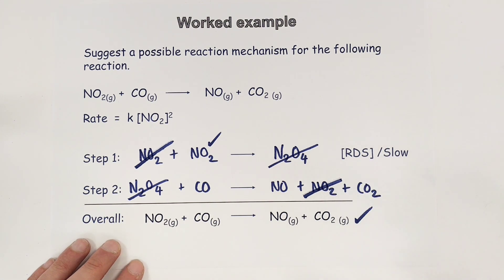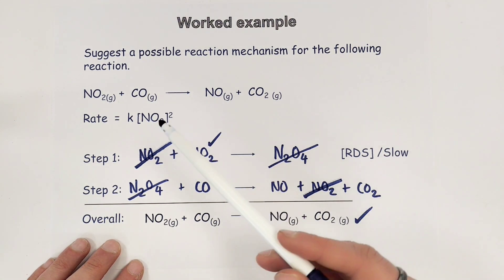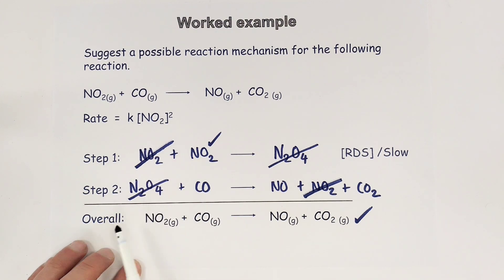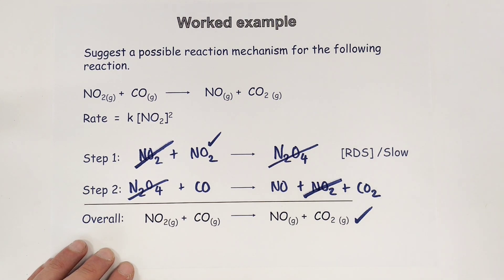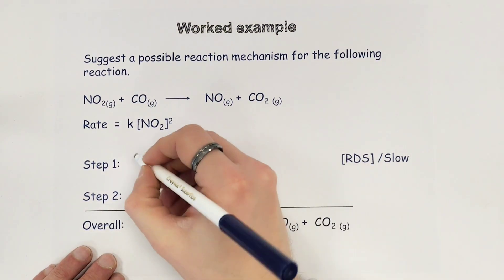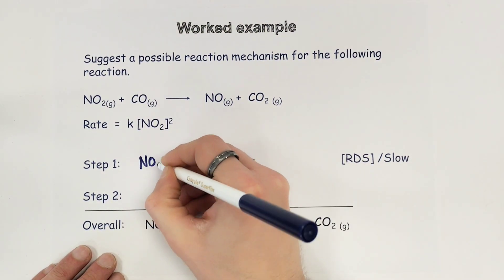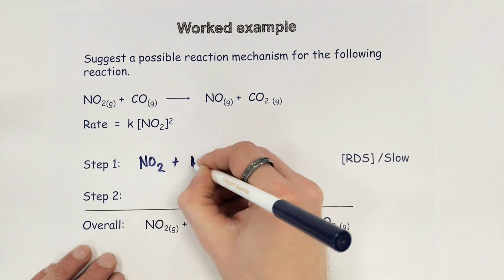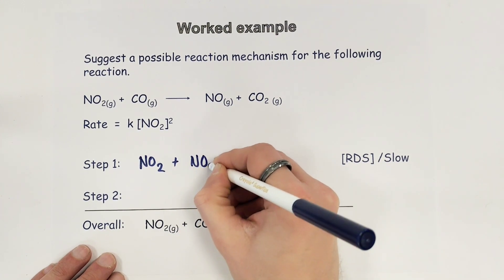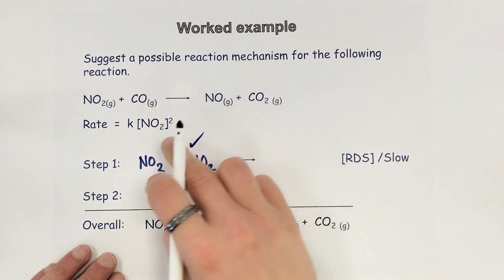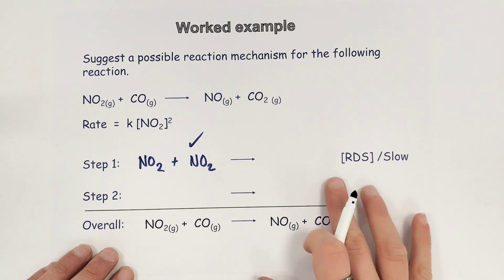This is a second way of solving the same problem, successful against the two criteria of agreeing with the rate equation and the overall balanced stoichiometric equation. I'm going to give you one more attempt to show that this is a very flexible question. Again, I'm going to start with two moles of NO2 so I immediately agree with the rate determining step in my first step, which is the slow step.